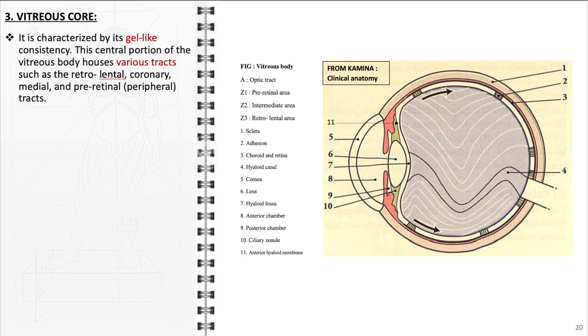The vitreous core, forming the central mass of the vitreous body, possesses a gel-like texture due to its high water content, supplemented by a network of collagen fibers and hyaluronic acid. This part of the vitreous is more than just a gelatinous mass; it includes structured pathways or tracts such as the retrolental tract behind the lens.